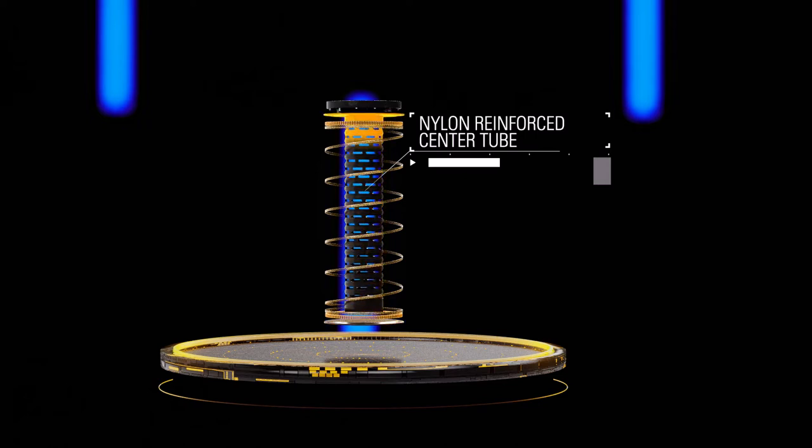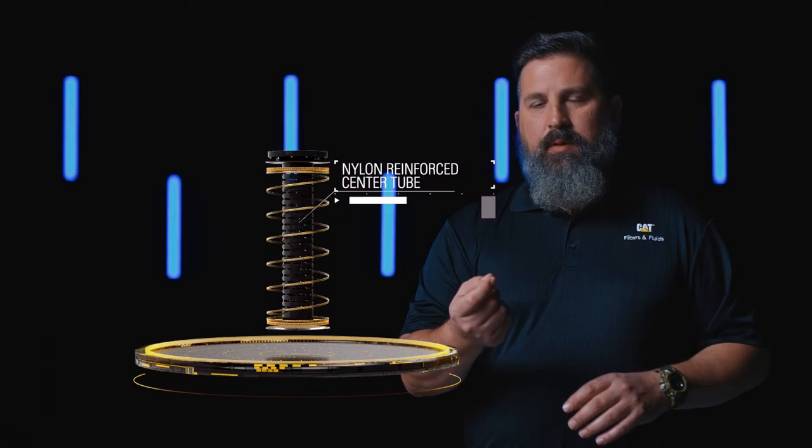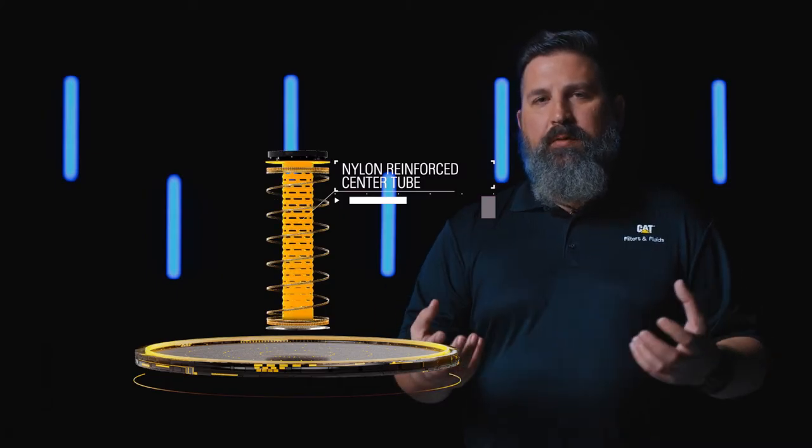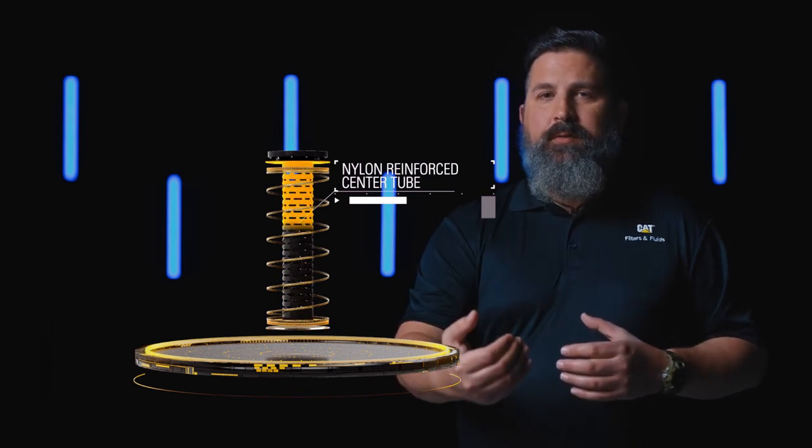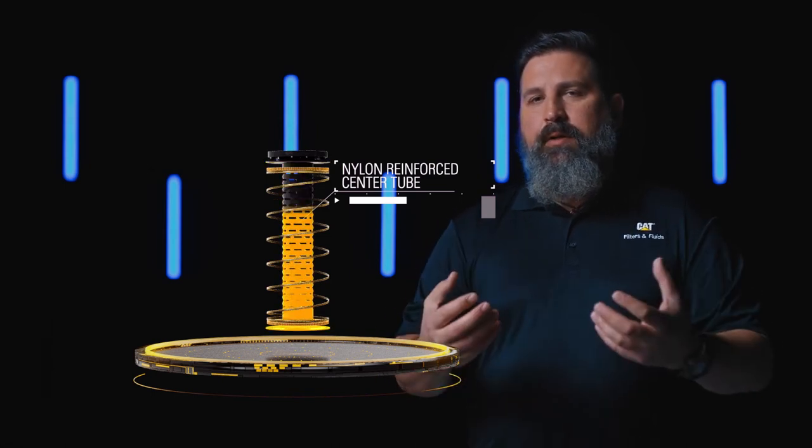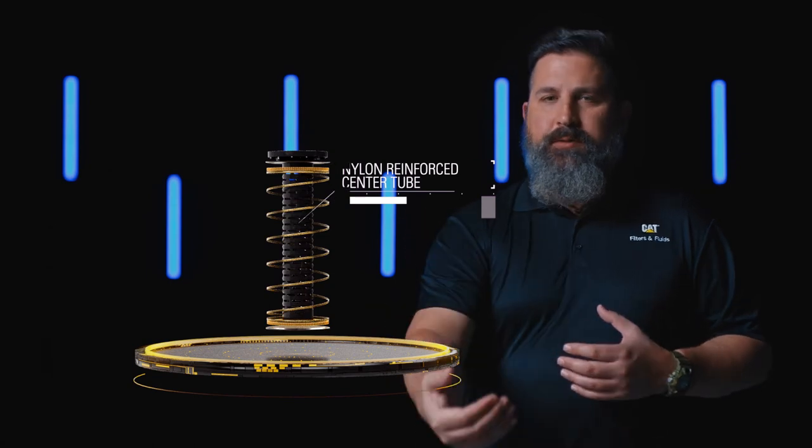When you look at some competitive filters, I've pulled a brand new filter out, pulled the plastic wrap off of it, and I can put my finger in that center tube, pull it out, and even a brand new filter, you can see small particles of metal. Well, that brand new filter already has contamination on the clean side of the filter. So imagine putting that on there, and that contamination goes right into your system.